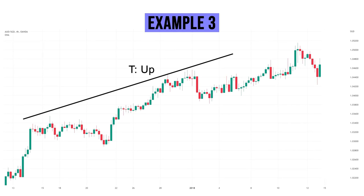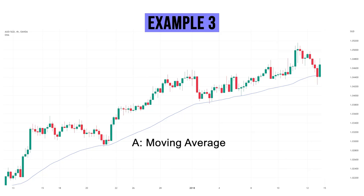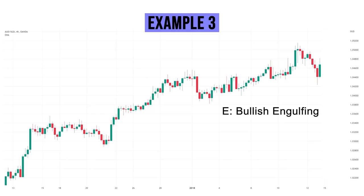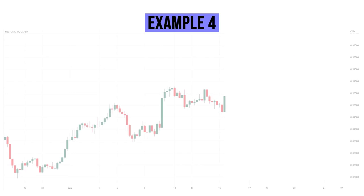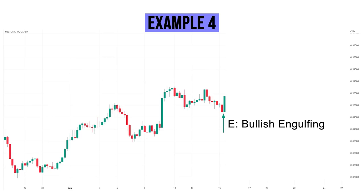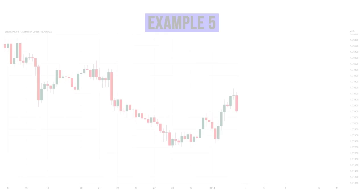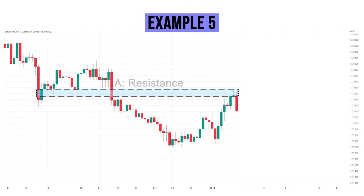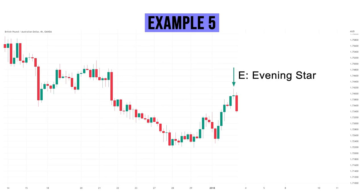In example three, we have an uptrend. The area of value is a dynamic support in the form of a moving average, and the entry trigger is a bullish engulfing pattern during the third bounce of the price. The price rejection of the red candlesticks and the larger green bodies signify control and conviction of the buyers. In example four, the uptrend continues with a trendline support as the area of value. Price bounced off support twice, and on the second bounce we see a bullish engulfing pattern as our entry trigger — signifying a significant price increase with buyers in control. In example five, we have a downtrend with a static horizontal resistance as the area of value. The entry trigger is an evening star pattern in the middle, representing seller control after the large red candle, so we expect price to keep going lower.